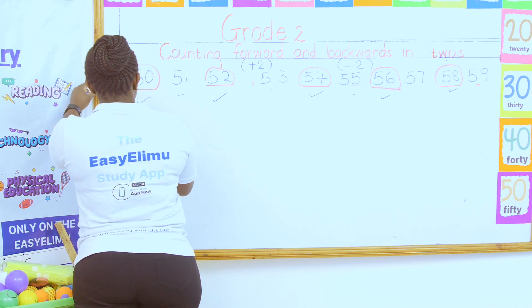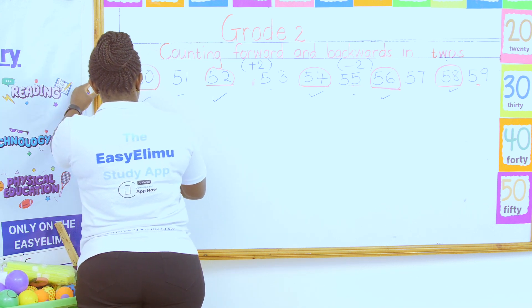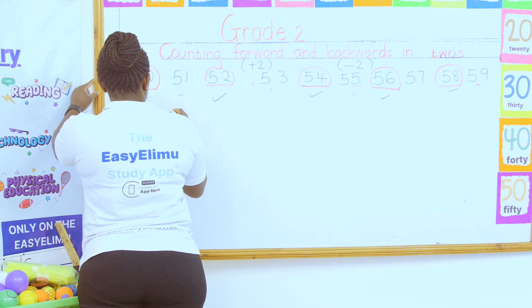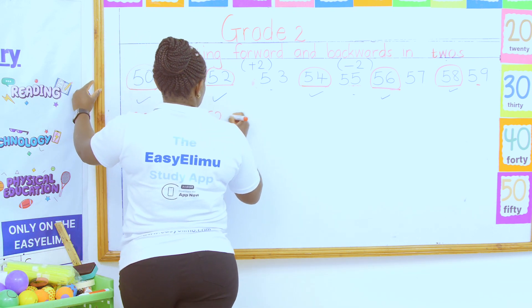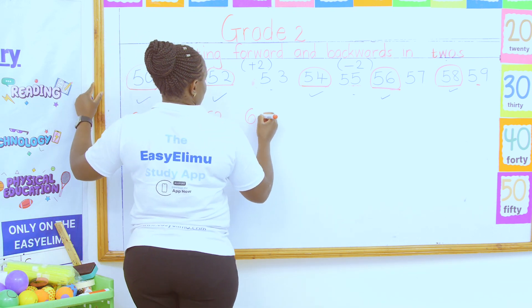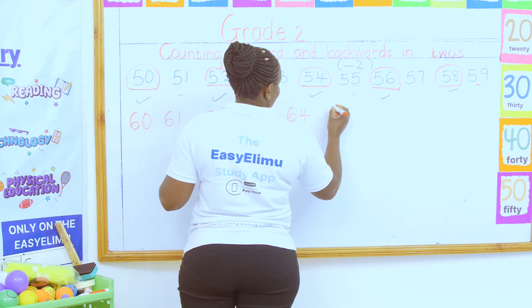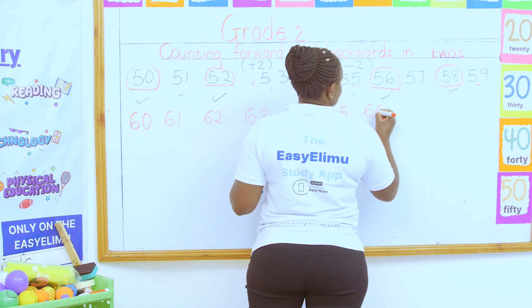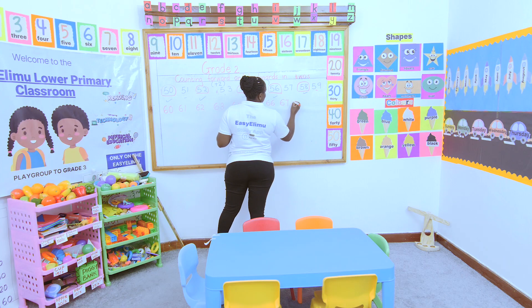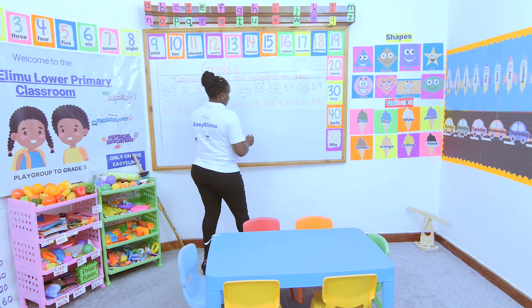I'm now counting from 60. So 60 is there. Then you have 61, 62, 63, 64, 65, 66, 67, 68, 69.